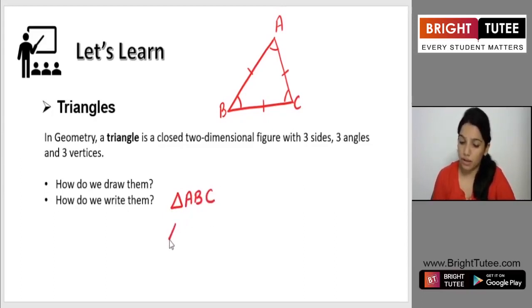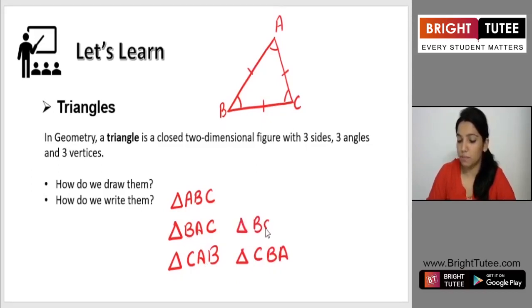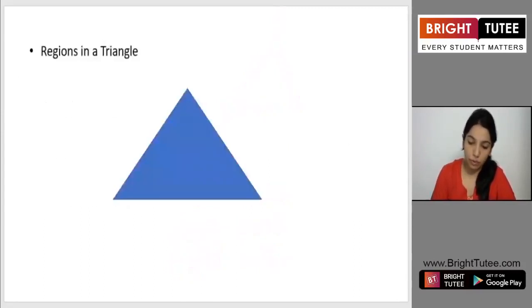Now also I can write the name of this triangle as BAC or I can write the name of this triangle as CAB. Do you think there are any other ways to write the name of this triangle? I think the answer is yes. As we have written CAB we can also write CBA. As we have written BAC we can also write BCA. And as we have written ABC we can also write ACB. So a single triangle here is written in six different ways. This is how we name them.